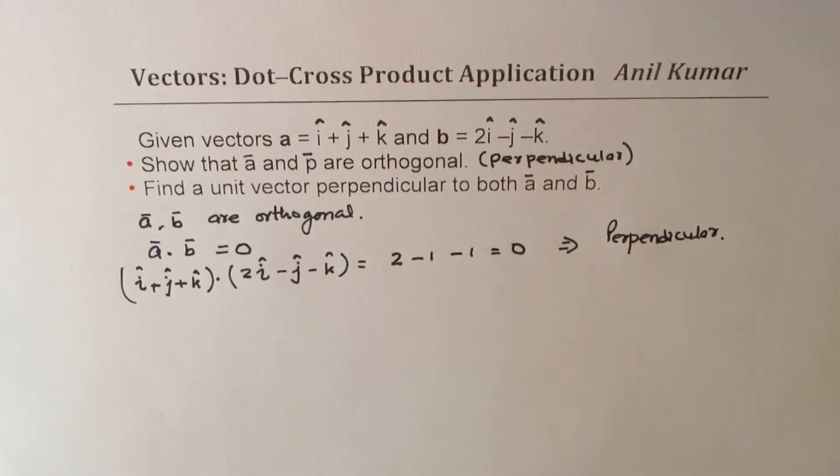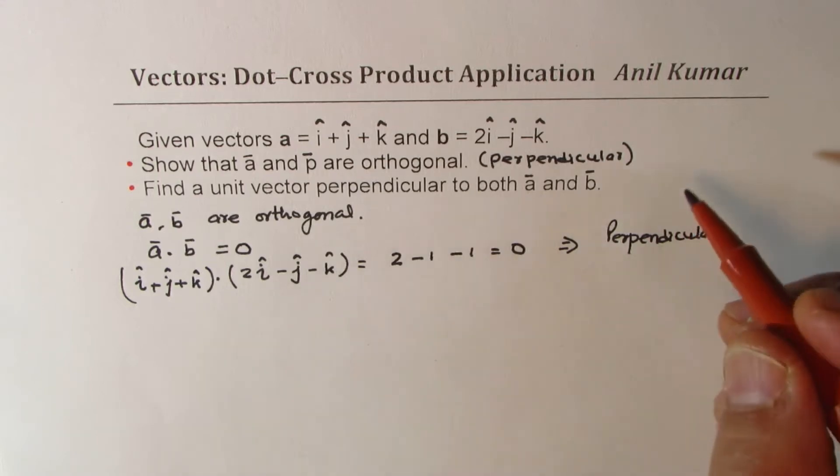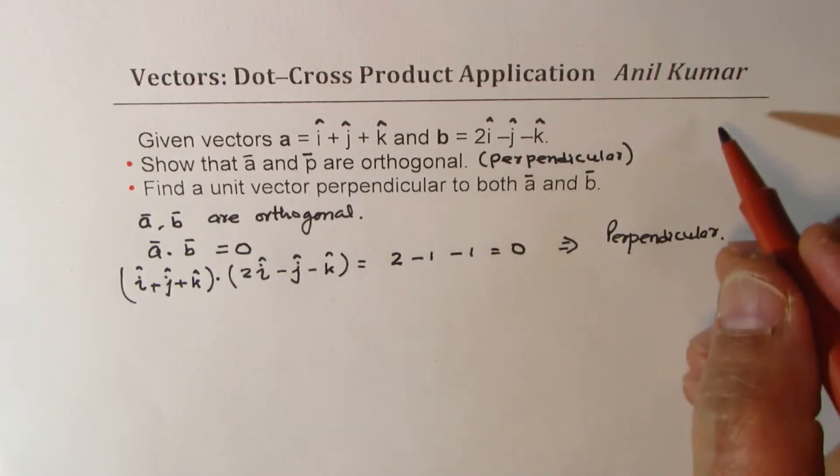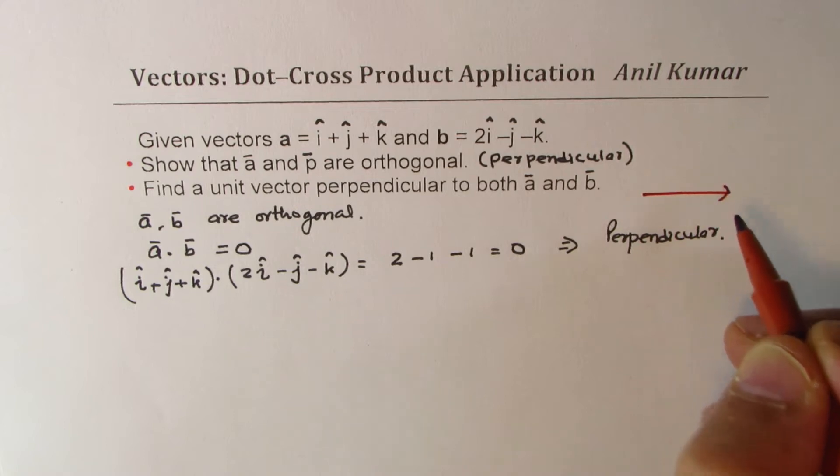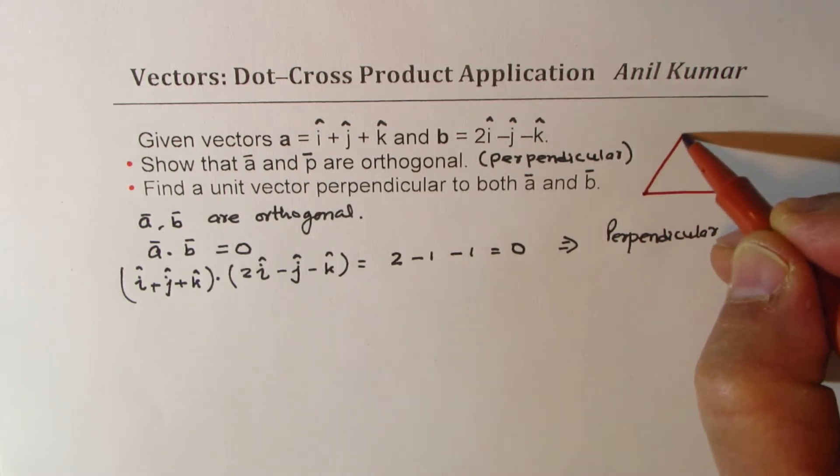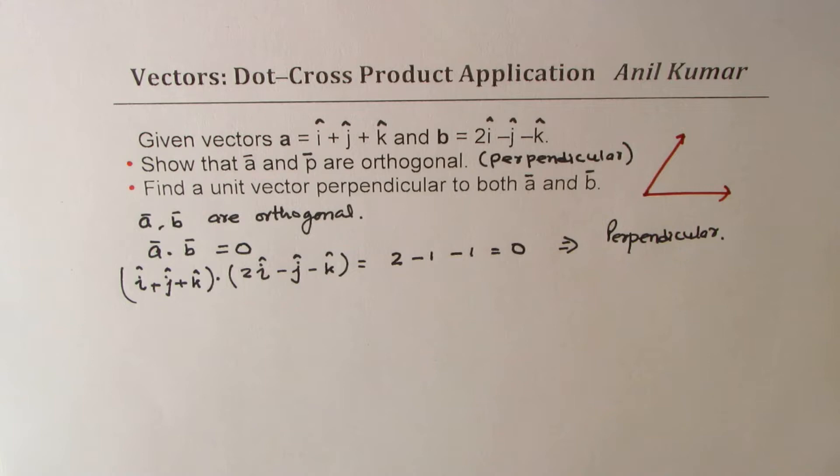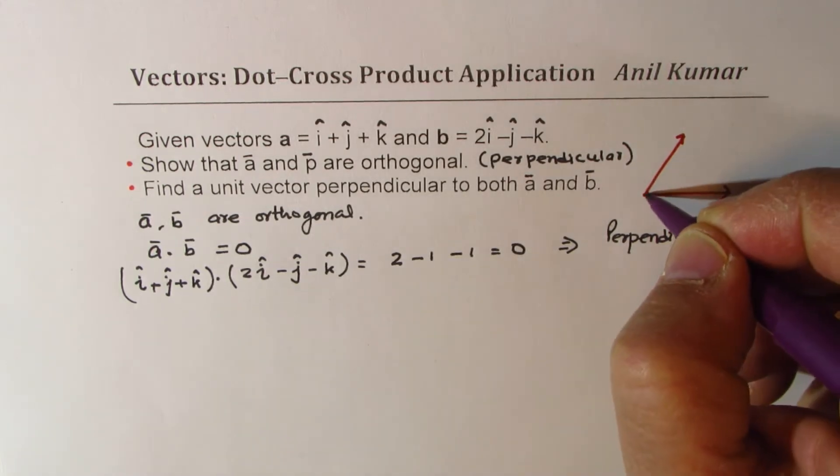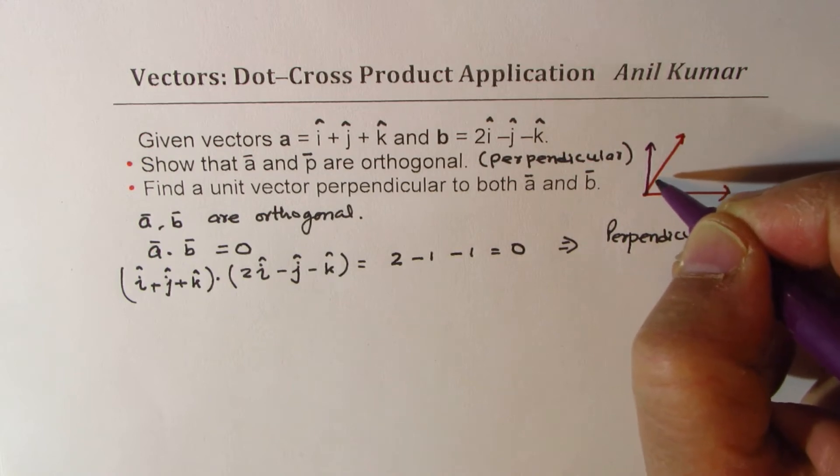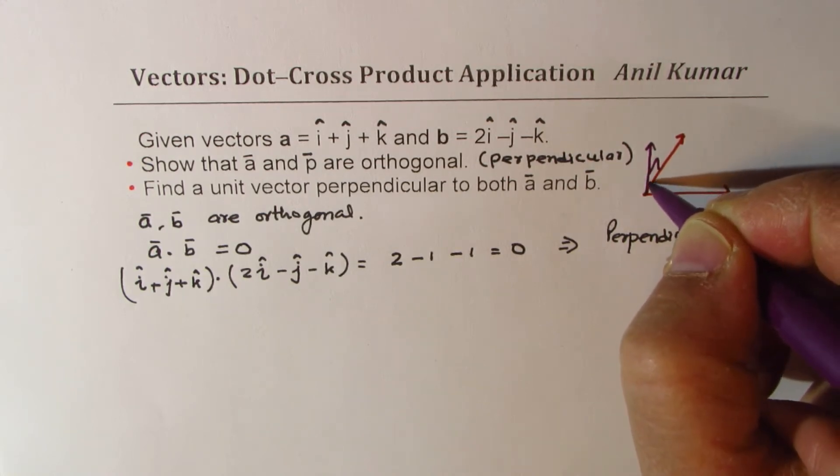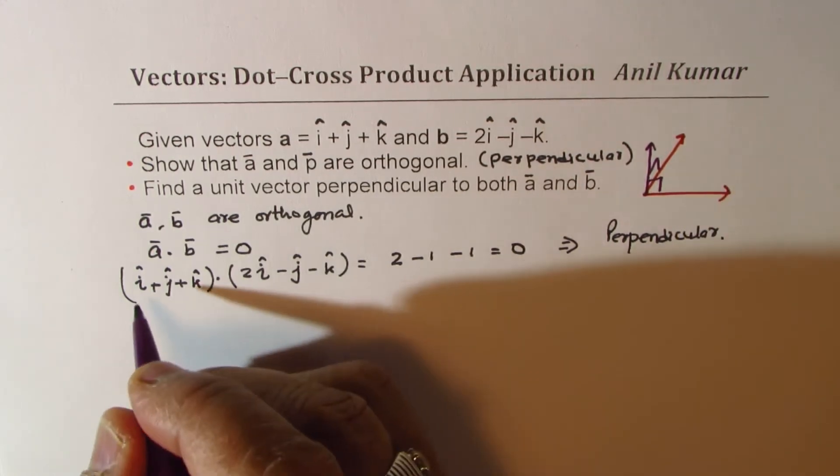Now part b, we need to find a unit vector perpendicular to both a and b. What we have learned here is that these two vectors could be on this paper, for example, like one and the other one. Now the one which is perpendicular to both will actually be perpendicular to the paper.